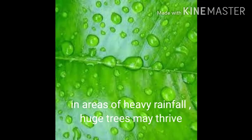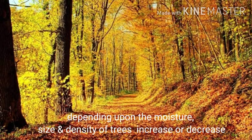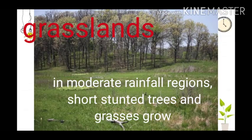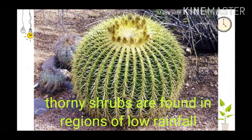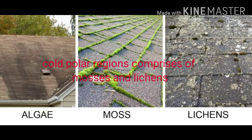In areas of heavy rainfall, huge trees may thrive. As the amount of moisture decreases, the size of trees and their density reduces. In regions of moderate rainfall, short, stunted trees and grasses grow, forming the grasslands of the world. In dry areas of low rainfall, thorny shrubs and scrubs grow. In such areas, plants have deep roots and leaves have thorny and waxy surfaces to reduce loss of moisture by transpiration.